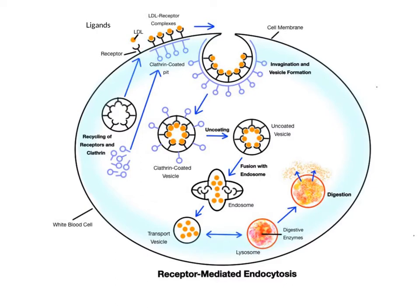In the final step, transport vesicles containing the LDLs move into lysosomes, and their contents fuse together, like in phagocytosis. The lysosomes' digestive enzymes break down the LDLs' proteins into amino acids and its lipids into fatty acids and cholesterol. The cell can now use these various chemicals for macromolecule synthesis or ATP generation.